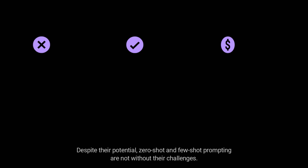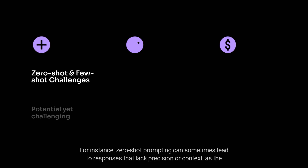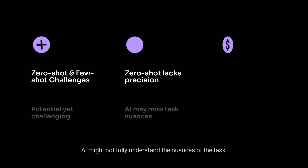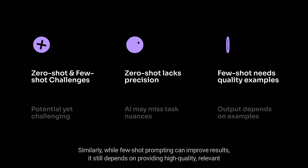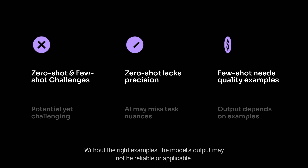Challenges and Considerations. Despite their potential, Zero-shot and Few-shot prompting are not without their challenges. For instance, Zero-shot prompting can sometimes lead to responses that lack precision or context, as the AI might not fully understand the nuances of the task. Similarly, while Few-shot prompting can improve results, it still depends on providing high-quality, relevant examples for the model to learn from. Without the right examples, the model's output may not be reliable or applicable.